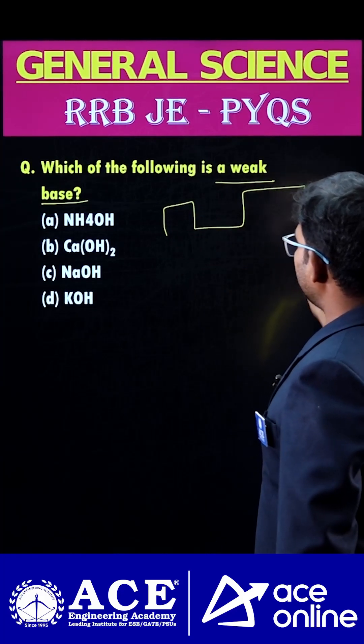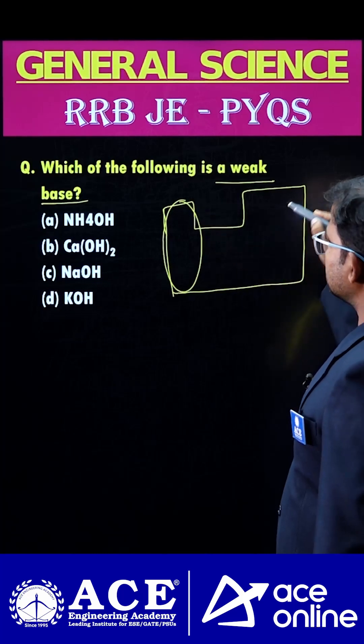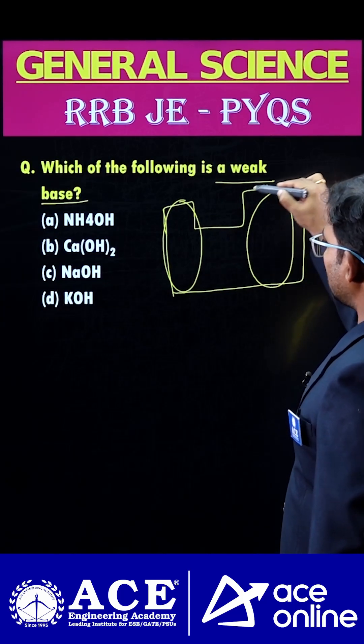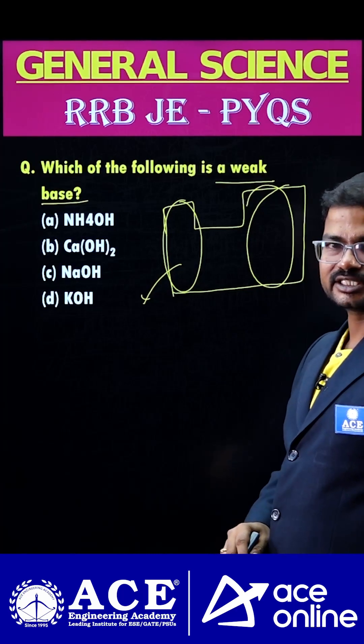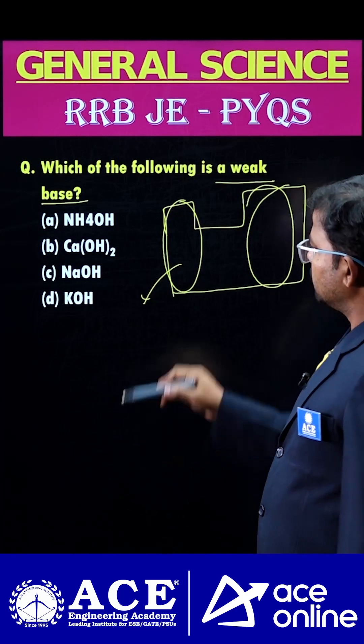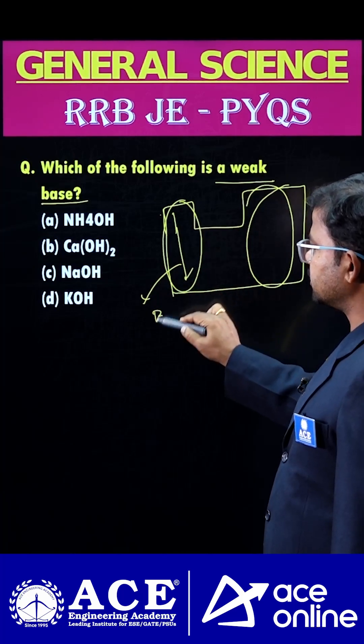Let's consider the periodic table. So here we have the best metals and here we have best non-metals. Metal hydroxides always exhibit basic in nature. If we move from top to bottom, mostly basic nature increases.